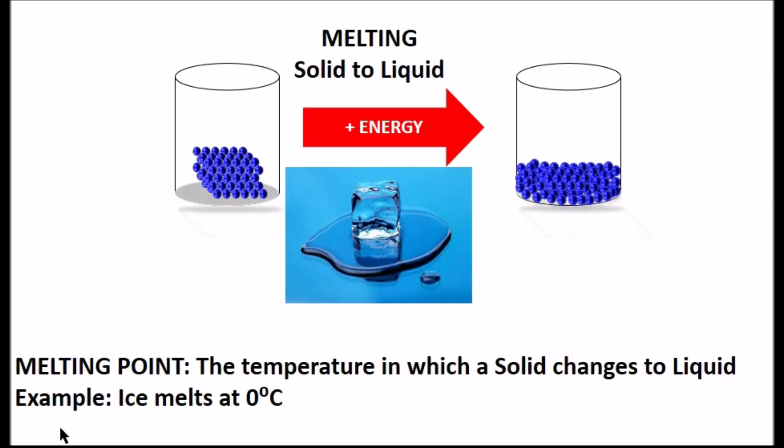The temperature at which the solid substance changes into a liquid is called the melting point. The melting point can be used to identify a substance. For example, if the substance is a solid inside the freezer and melts at zero Celsius, transforming into a clear liquid at room temperature, and it does not smell, it may be water.